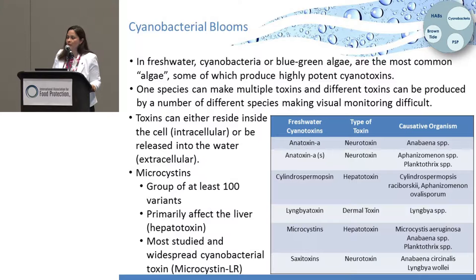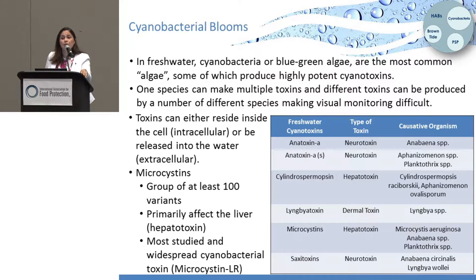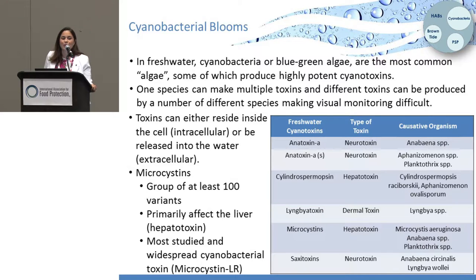An important thing about cyanobacterial toxins is that since it's a bacterium, the toxins are within the cell wall. You can have an intact cell and not have toxins in the water. Once that cell breaks, it releases the toxin. So you may have a toxin-producing cyanobacteria species but no toxins in the water, because they are contained within the cell. Microcystins are the most common toxin worldwide — though again, we don't know if it's because we're looking more for microcystins.